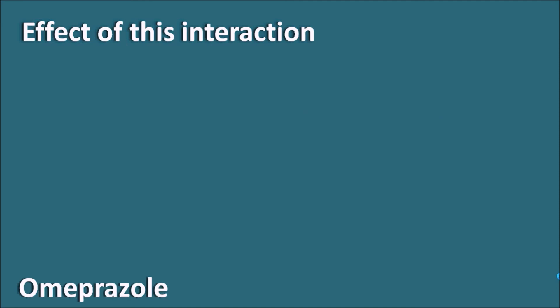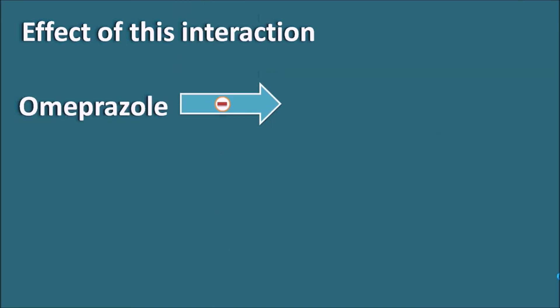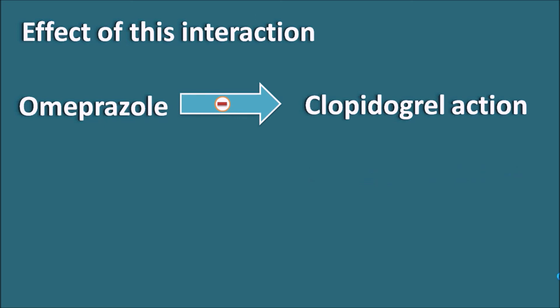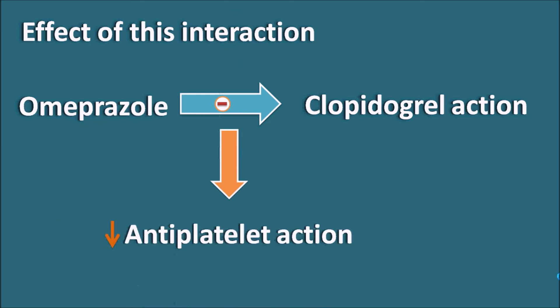What is the effect of this interaction? Omeprazole inhibits the bioactivation of clopidogrel, thereby inhibiting clopidogrel's action. Whenever omeprazole is given along with clopidogrel, it decreases the antiplatelet action of clopidogrel, as clopidogrel is not metabolized to its active metabolite. This is very important in patients suffering from stroke or clot formation within blood vessels, where antiplatelets are critical to reduce further cardiovascular risk. That is why omeprazole should not be combined with clopidogrel, in order to prevent loss of antiplatelet activity.